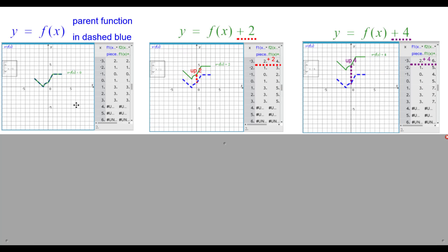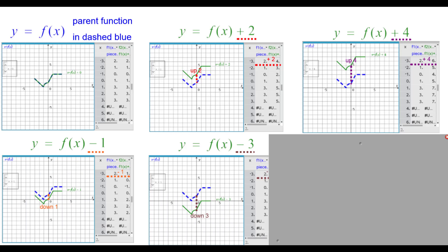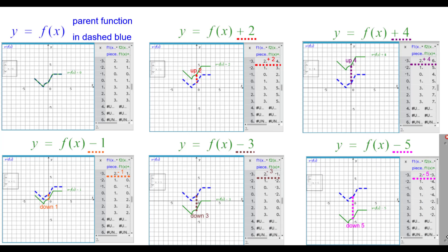Finally, here's another generic piecewise function y equals f of x in dashed blue. Here's that same function plus 2 and plus 4 — notice the table and graphs. Then y equals f of x minus 1, minus 3, and minus 5. Press pause anytime as needed.